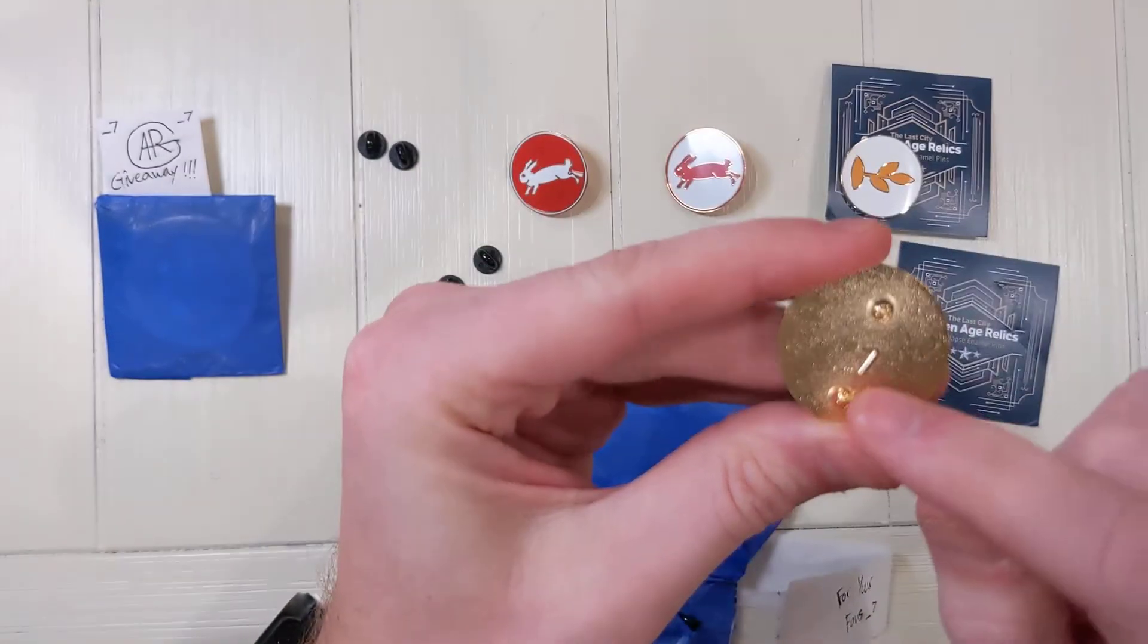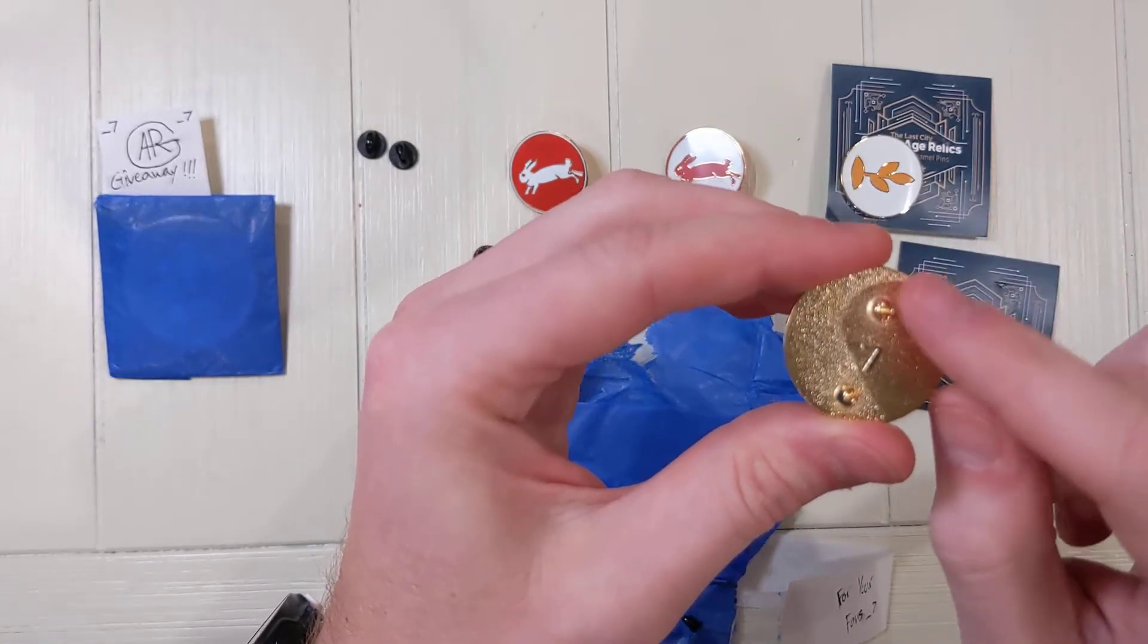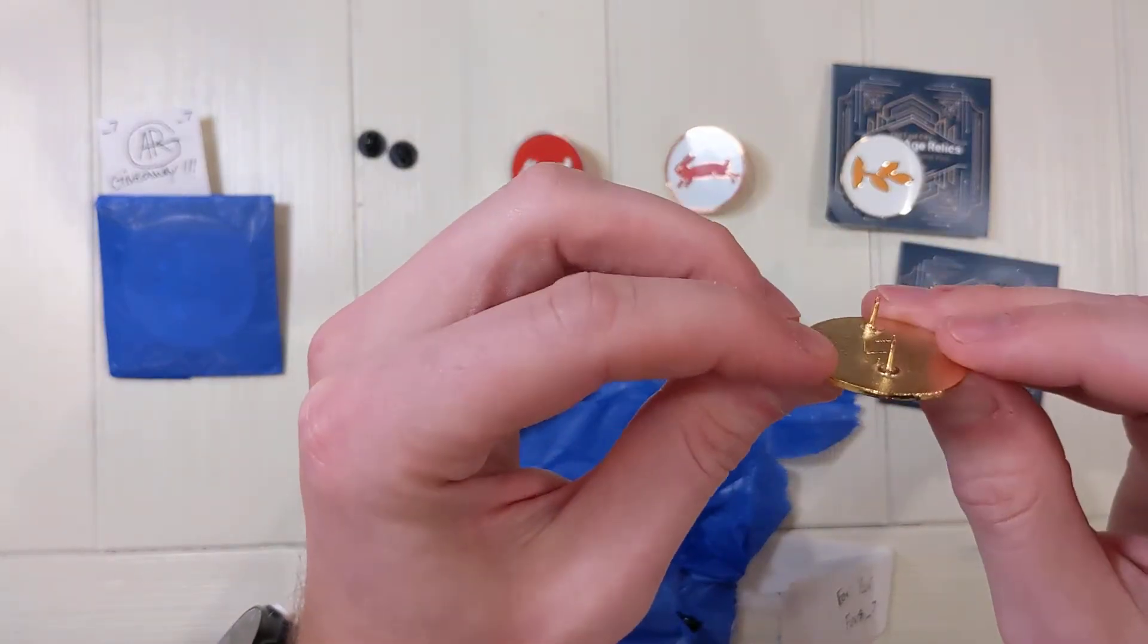And these are, this is interesting because a lot of times with circular pins or pins this small, there'll be one of the backers. But these have two and I'm really glad it does. It really helps with the positioning of it.